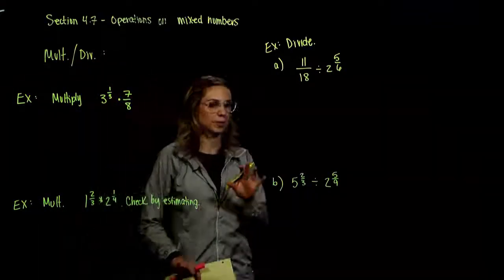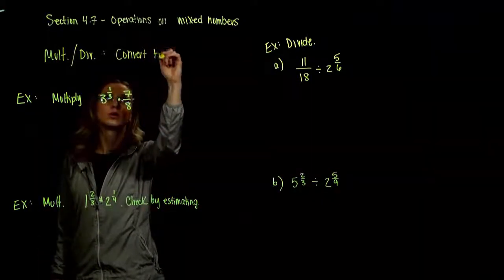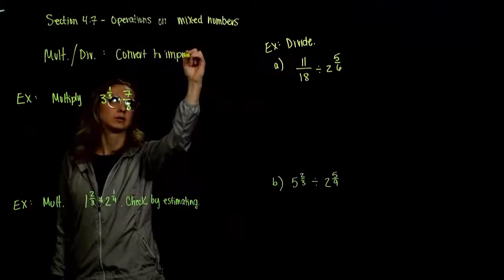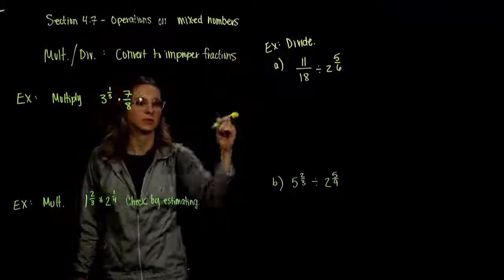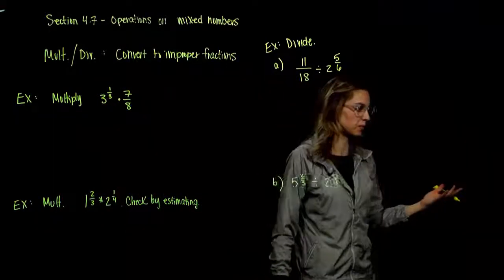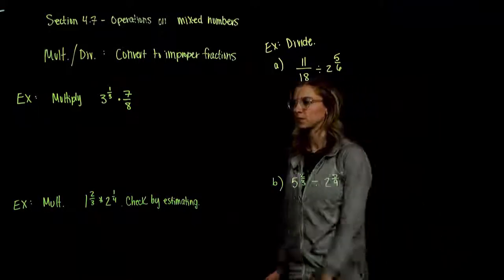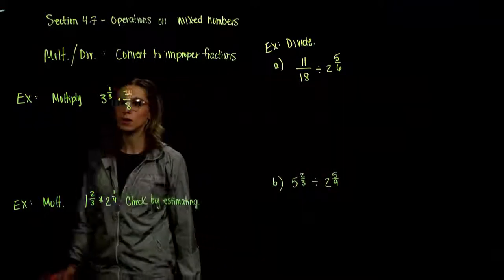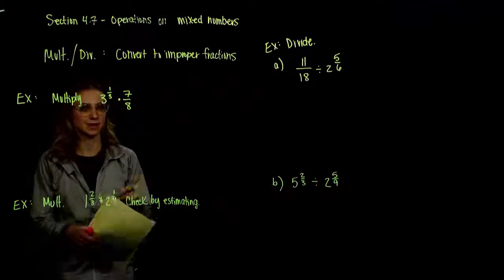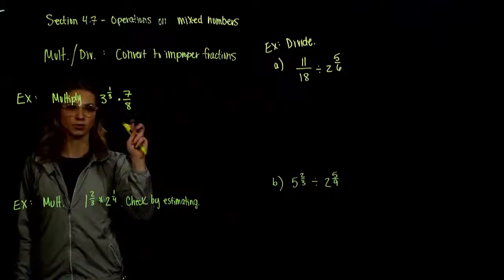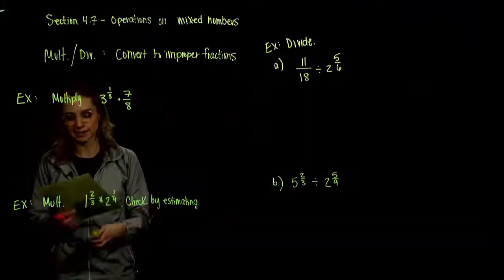Our very first step in every single case is going to be to convert to improper fractions. So when we're dealing with mixed numbers, the very first thing to do is make it not a mixed number anymore. So in this first example, we want to multiply three and one-third times seven-eighths. We've already got a traditional fraction over here, so we want to take three and a third and write it as an improper.